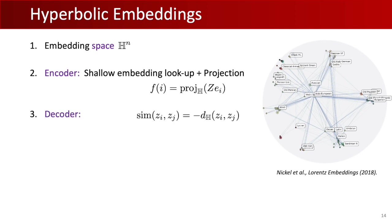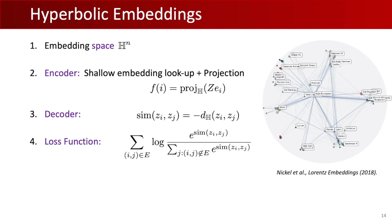The decoder takes two points in hyperbolic space and uses the negative hyperbolic distance to assign a similarity score to embedding pairs. Intuitively, similar pairs should have low hyperbolic distance while dissimilar pairs should be far apart. For the loss function, Nickel adapts the skip-gram word2vec model to learn graph representations: the numerator pulls connected pairs closer together while the denominator pushes negative pairs apart in hyperbolic space. This can be interpreted as a soft ranking loss, and the denominator is typically approximated with negative sampling — as in word2vec skip-gram models — for computational efficiency.